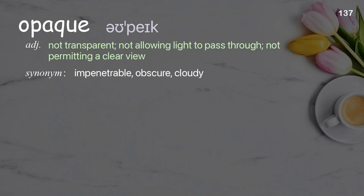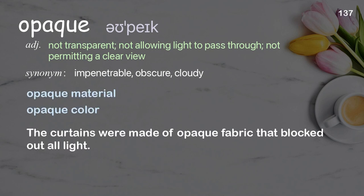Opaque: not transparent; not allowing light to pass through; not permitting a clear view. Examples: opaque material, opaque color. The curtains were made of opaque fabric that blocked out all light.